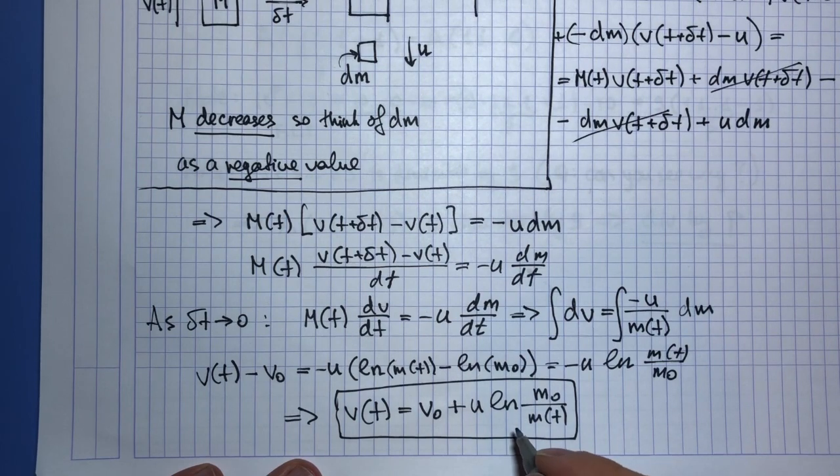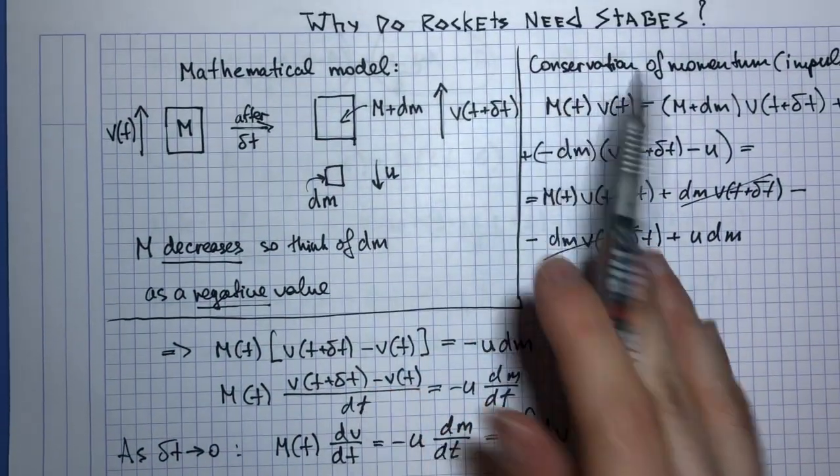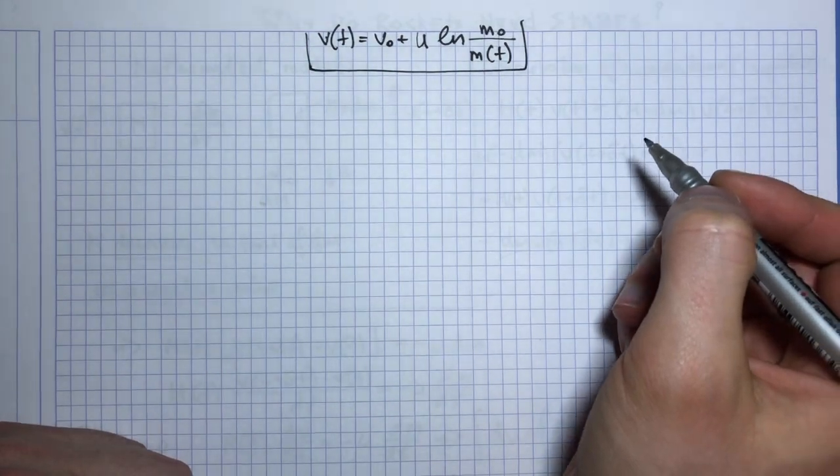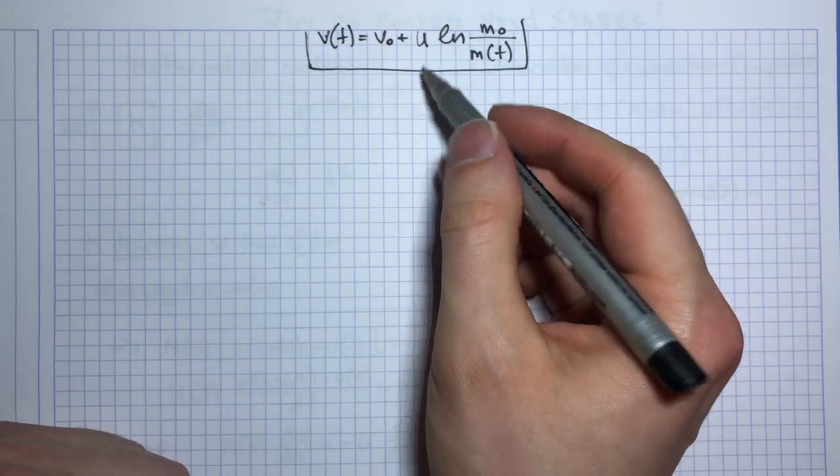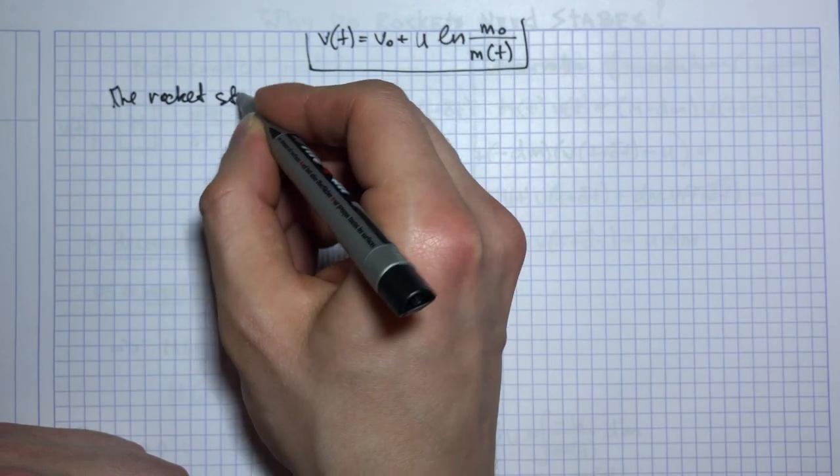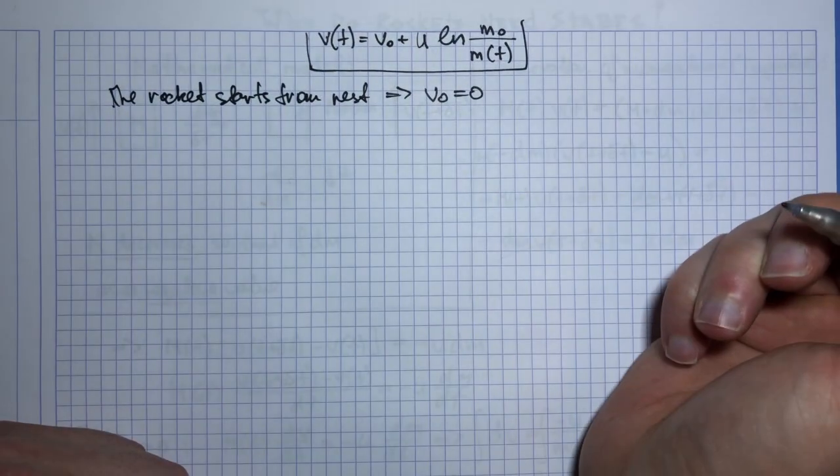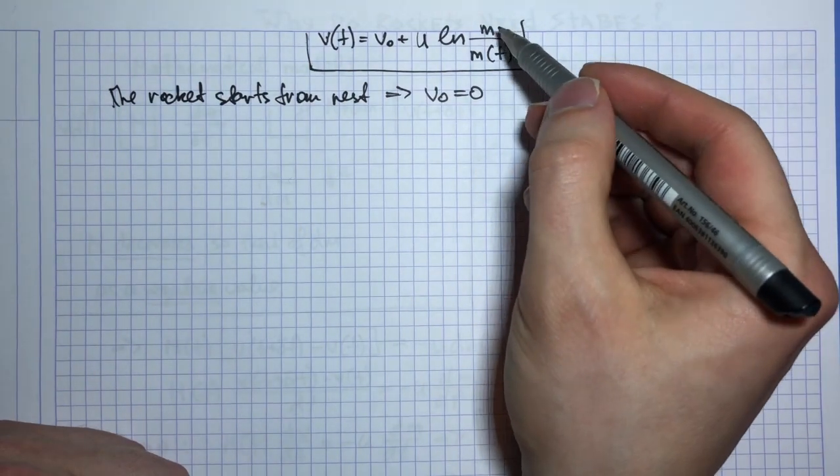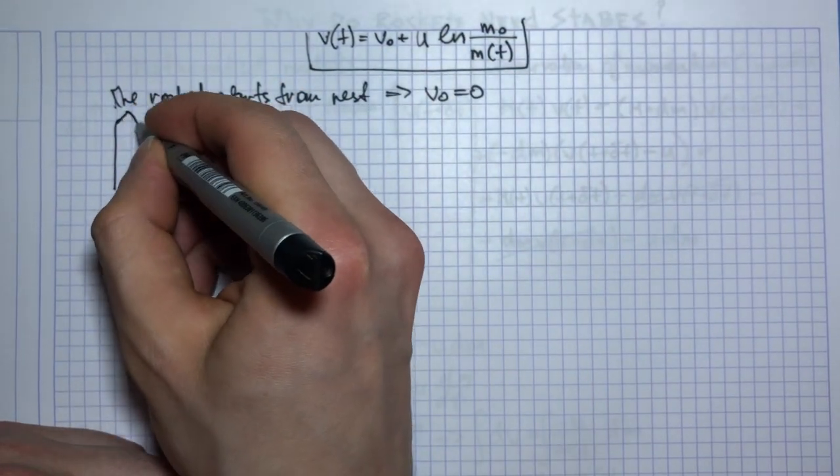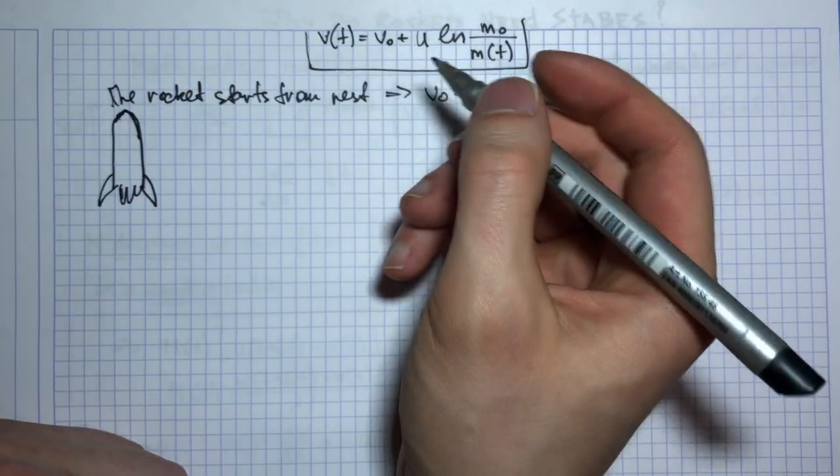So now we want to look at this equation and study why does it impose bounds on the structure of the rocket. All right, so I rewrote my equation up here, and let us consider the actual real world situation. So the rocket starts from rest, so we can assume that v0 is zero.